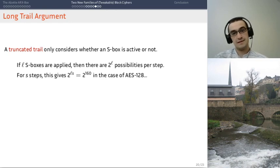So, if you have s steps to take into account, that gives you a total of two to the power l times s. So, in the case of AES 128, which is a 10-round cipher with an 8-bit s-box where you have 16 of them applied in parallel, that gives you a search space of size 2 to the 160.